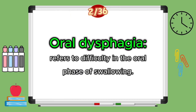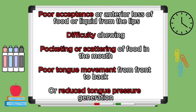Oral dysphagia refers to difficulty in the oral phase of swallowing. This can happen due to poor acceptance or anterior loss of food or liquid from your lips, difficulty chewing, pocketing or scattering of food in your mouth, poor tongue movement from the front to the back, or reduced tongue pressure generation.